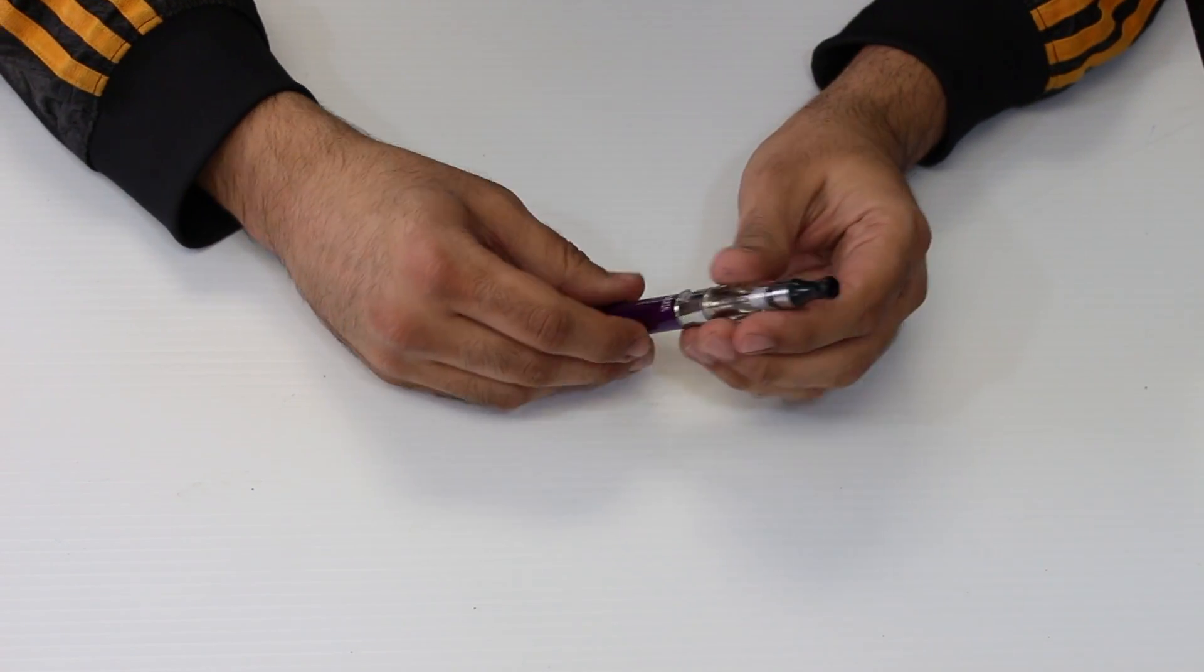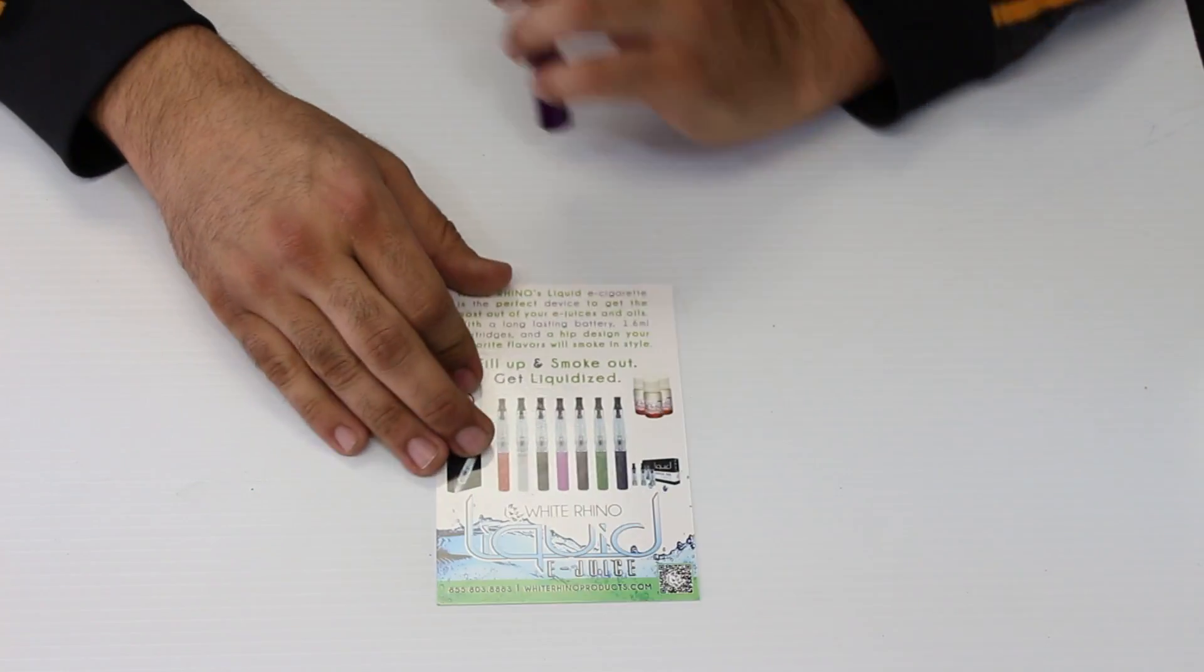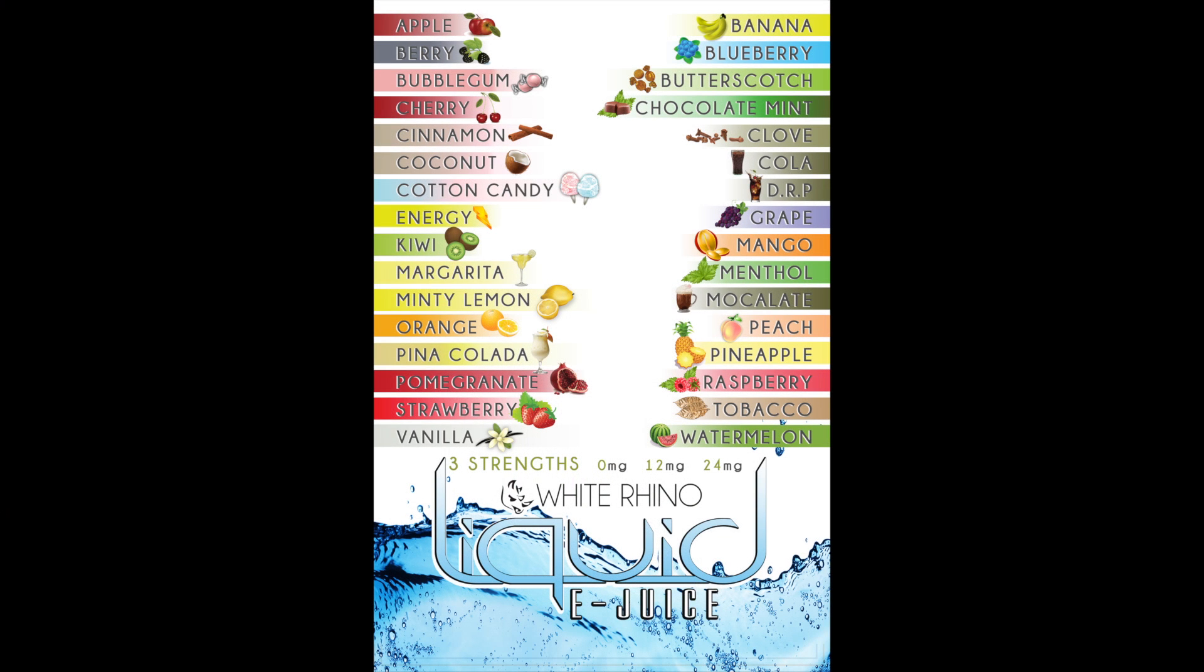Also don't forget - let me show you a few things actually real quick. We do offer many colors, all the flavors. As I said earlier, we do have all the different flavors of juices, and we do offer it in three nicotine strengths: zero milligram, 12 milligram, and 24 milligram.